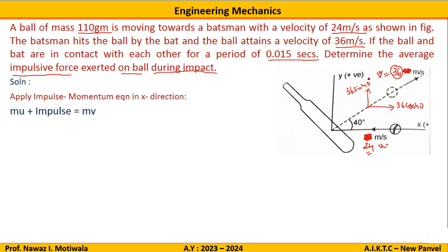Starting with the impulse-momentum equation in the X direction: MU + impulse = MV. This is the basic impulse-momentum equation. Since impulse is given by F × T, replacing impulse gives: MU + ΣFT = MV. As we are applying this in the X direction, all velocities and forces considered will be in the X direction only. So we write MU_X + F_X·T = MV_X.